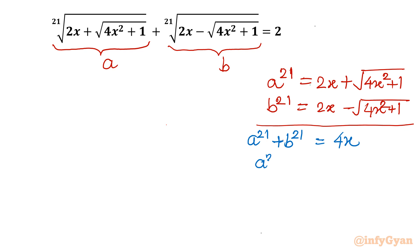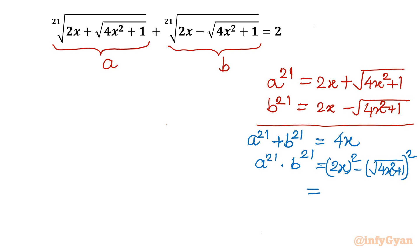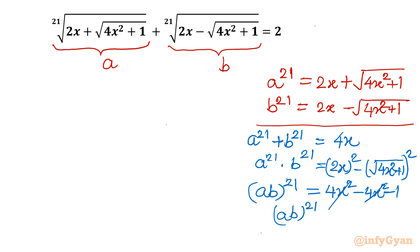Now I will take the product: a²¹ · b²¹ equals (2x + √(4x²+1))(2x - √(4x²+1)), which is a difference of two squares: 4x² minus (4x²+1), giving negative 1. So (ab)²¹ = -1. Since 21 is an odd power, we can write this as (-1)²¹, so the conclusion is ab = -1. This is a very important result.